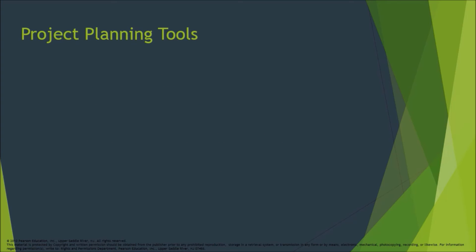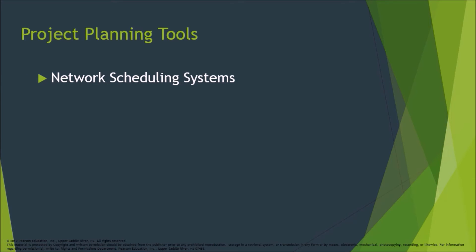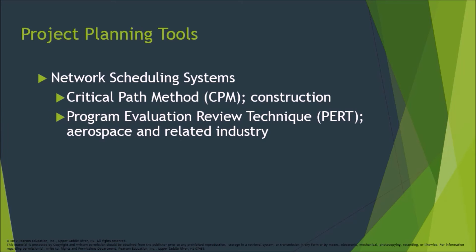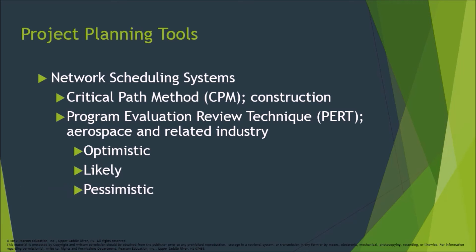Project planning tools — Network scheduling systems: Critical Path Method (CPM) is used in construction. Program Evaluation Review Technique (PERT) is used in aerospace and related industries, incorporating optimistic, likely, and pessimistic time estimates.